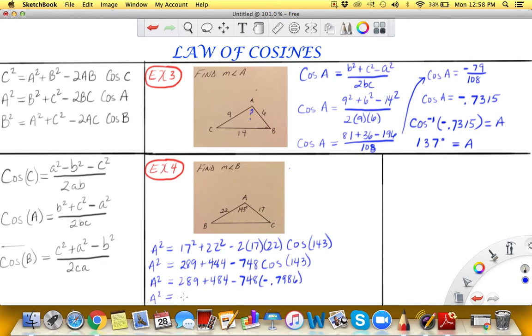A squared is equal to 289 plus 484 and then minus negative 597.4. I got this negative 597.4 by simply multiplying the cosine of 143 by 748. So from here we'll go right here and we'll say that A squared is equal to 1370.4.